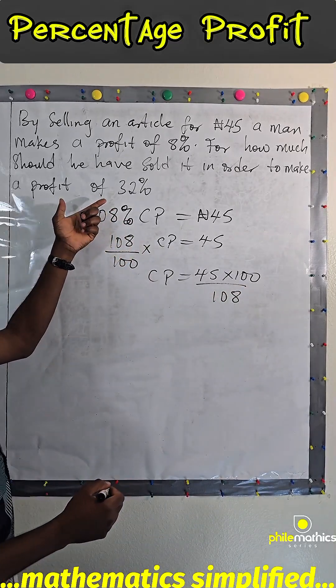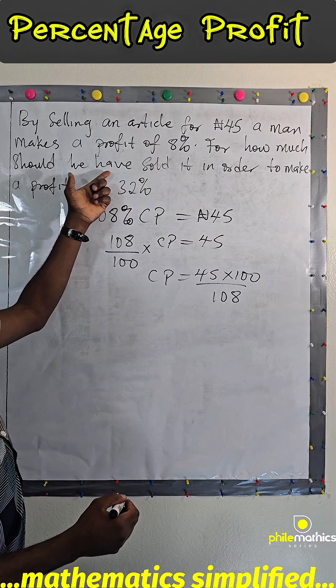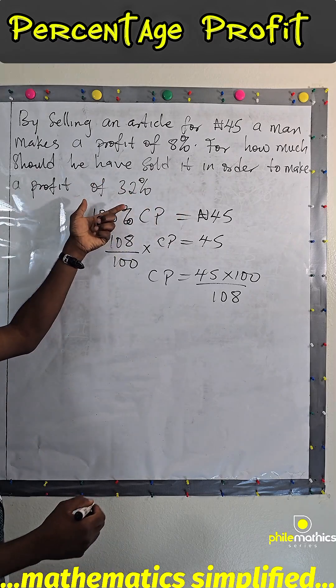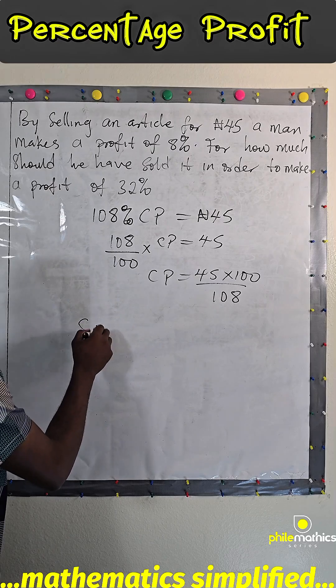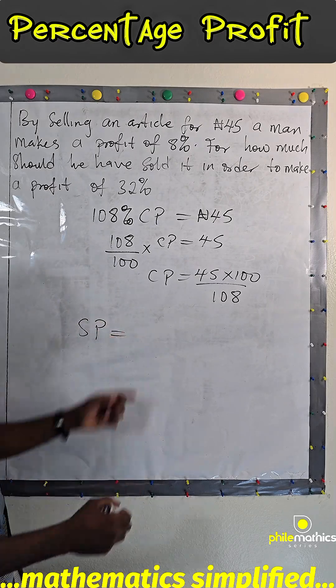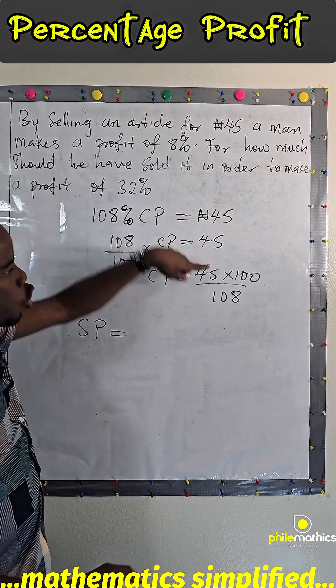Now, to look for how much he should have sold it in order to make 32%, the selling price will be 132% of this cost price we have made.